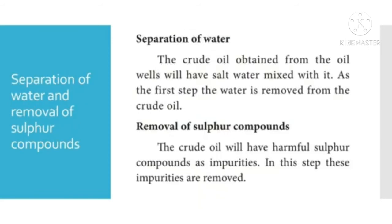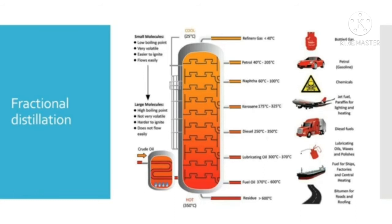The steps involved in refining are as follows. First, separation of water: the crude oil obtained from the oil wells will have salt water mixed with it, so the water is removed. Second, removal of sulfur compounds: the crude oil will have harmful sulfur compounds as impurities, and these are removed. Third, fractional distillation: petroleum is a mixture of various constituents such as petroleum gas, petrol, diesel, kerosene, lubricating oil, paraffin wax, etc. The process of separation of various fractions of petroleum is done by fractional distillation in fractionating columns.